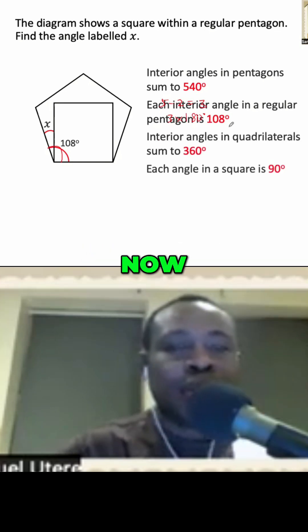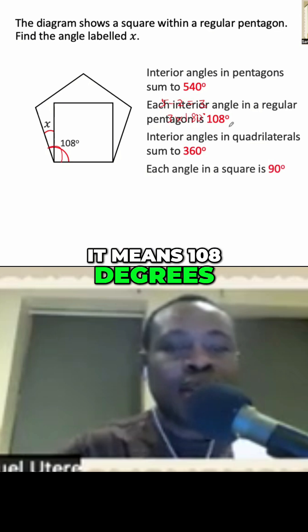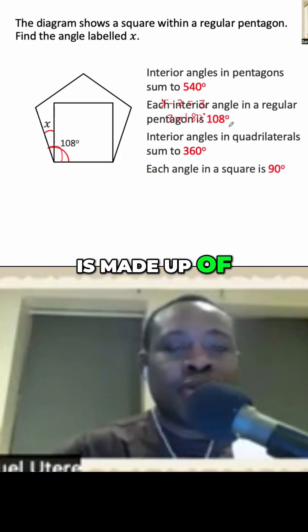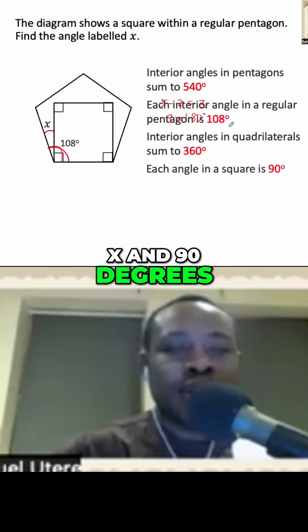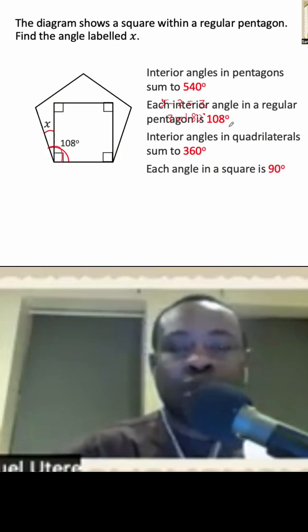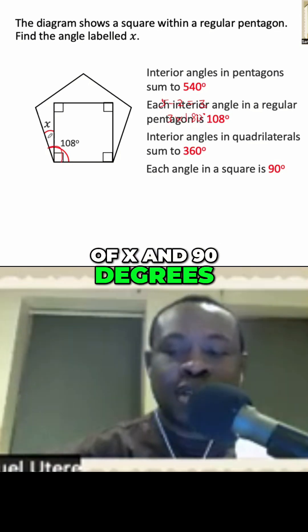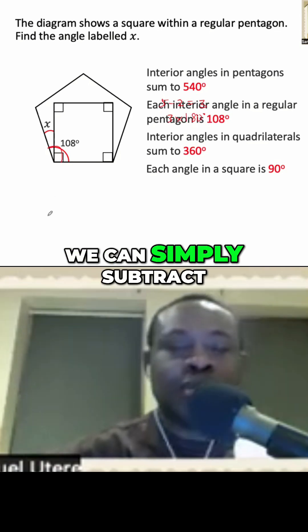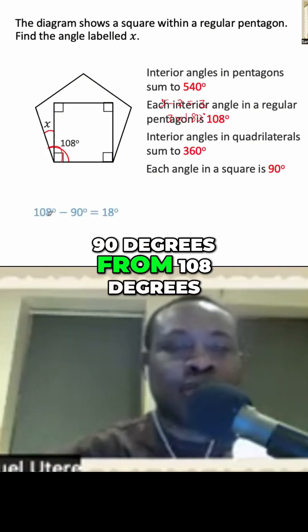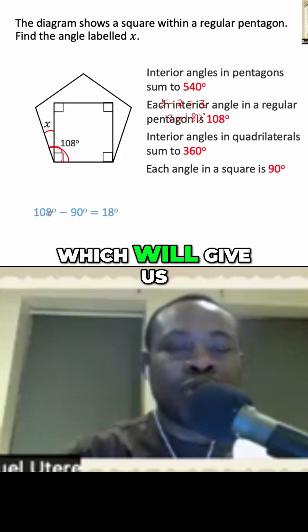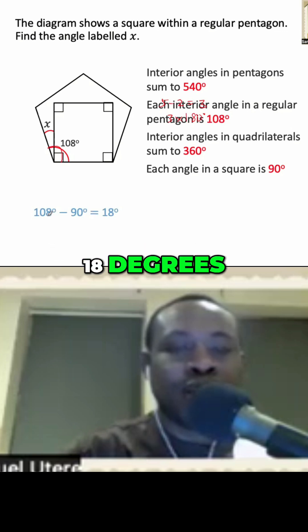Now, it means 108 degrees is made up of X and 90 degrees. So if 108 is made up of X and 90 degrees, to get X, we can simply subtract 90 degrees from 108 degrees, which will give us 18 degrees.